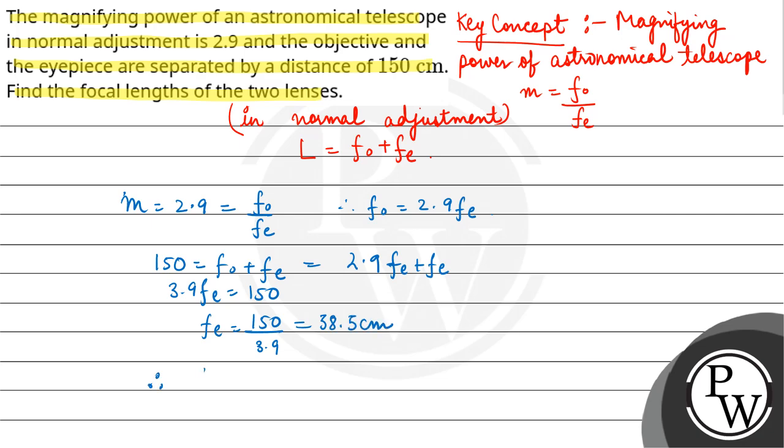So F_o will be 2.9 F_e here, that is 2.9 into 38.5, which is 111.6 centimeters. So we got the focal lengths of eyepiece and objective.